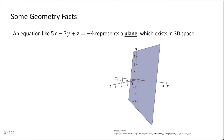An equation that has three variables is going to represent a plane that exists in 3D space. For example, 5x minus 3y plus z equals negative 4 is the equation pictured here, and you can see that it represents a plane in 3D space. It's 3D because in addition to my x and y axes, I have this third axis, which is my z-axis.